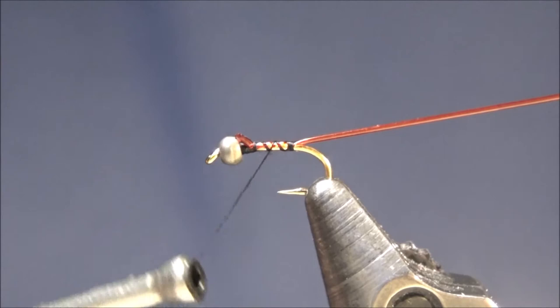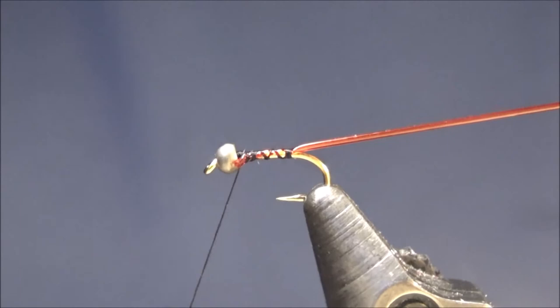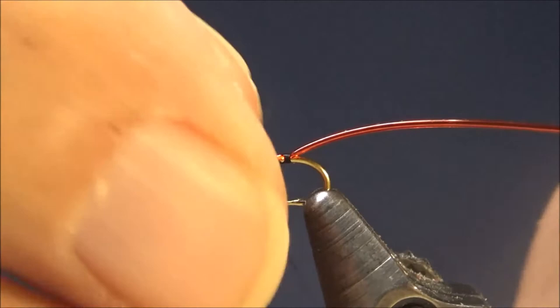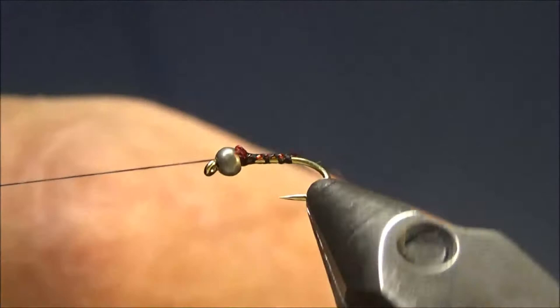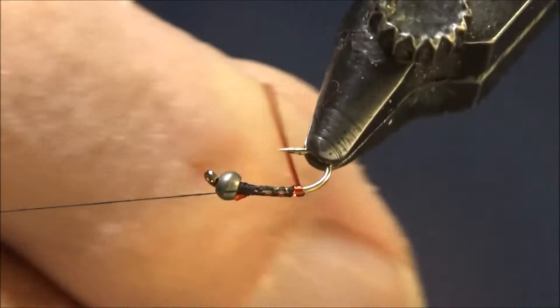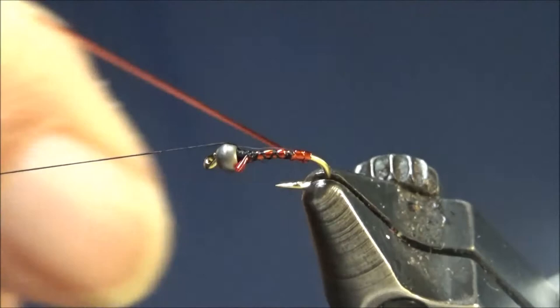At this point, I'm going to put in a half hitch and I'm going to bring my thread over. I'm going to make a couple of loose wraps with the tubing down towards the bend, and then I'm going to stretch it and continue down the bend.